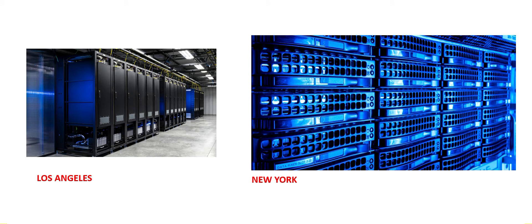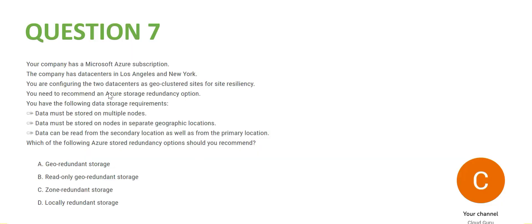These data centers are configured as geo cluster sites for site resiliency — meaning if Los Angeles fails, New York will be up and vice versa. This is the list of data storage requirements. The question asks what redundancy options we should recommend. Options A, C, and D are wrong because C is zone and D is local.